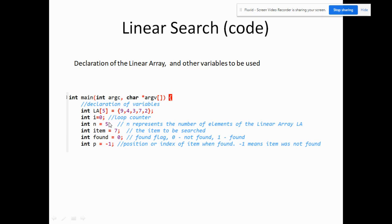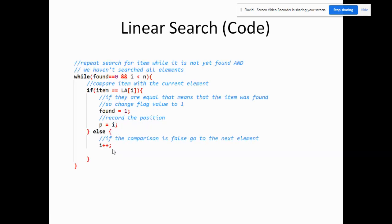Integer n is equal to five, which represents the number of elements in the linear array. Item is the item to be searched — let's say we're looking for the number seven. Found is a flag variable: zero when the search is not yet successful, and one if the search is successful. P will be the position or index where we find the item, initially set to negative one, since zero is the first valid index.